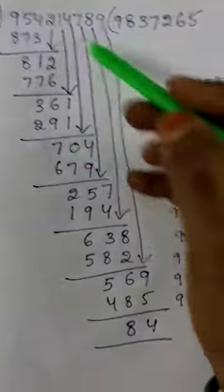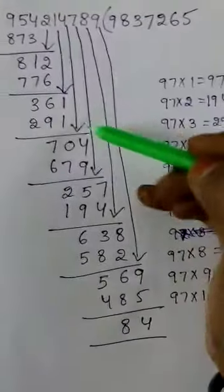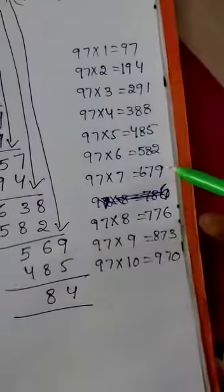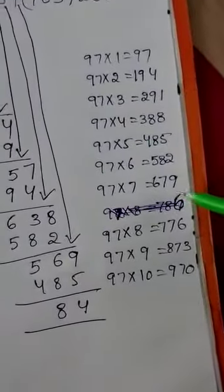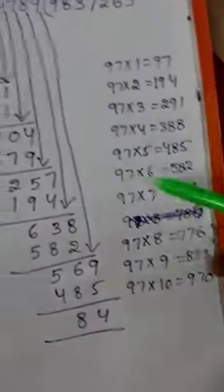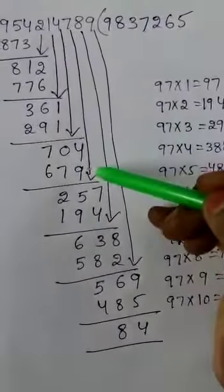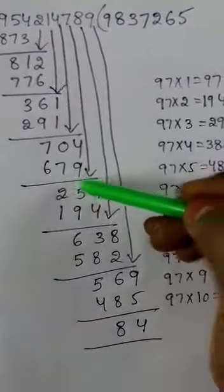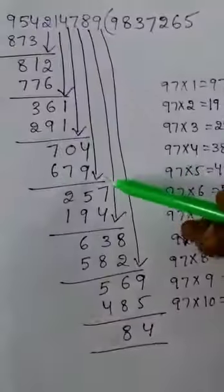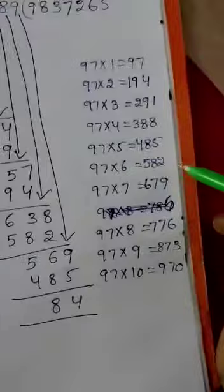Minus gives us 70. Next, the 4th step is 704. 704 gives 679. So 7 times — 7 raised by 679.